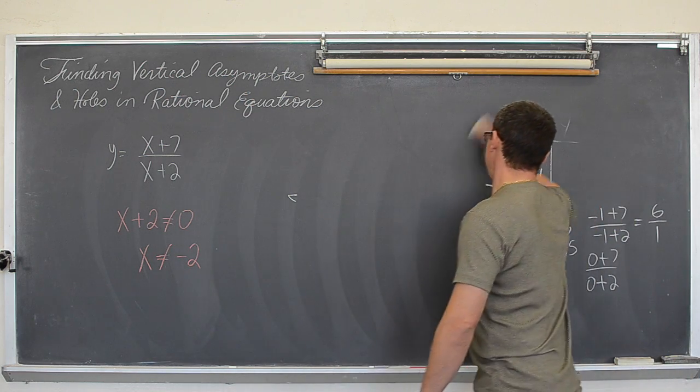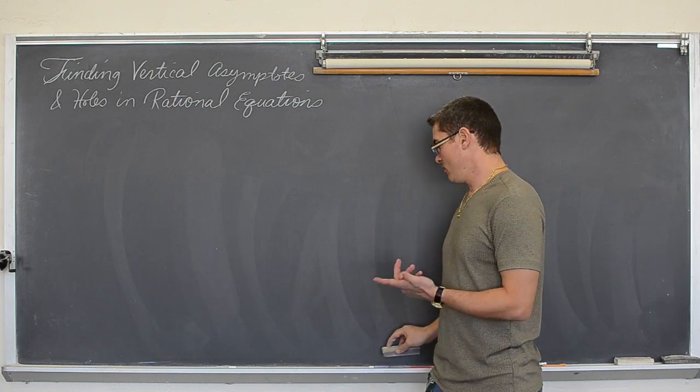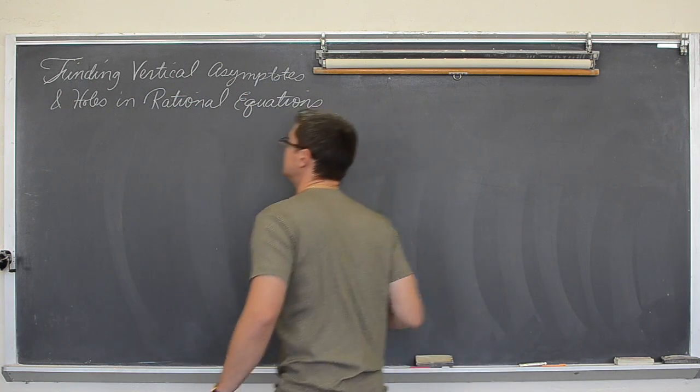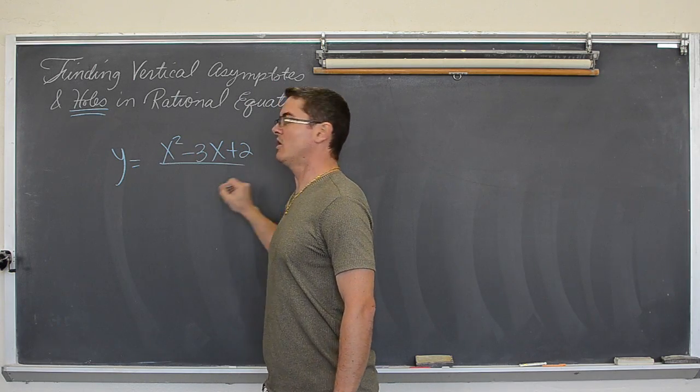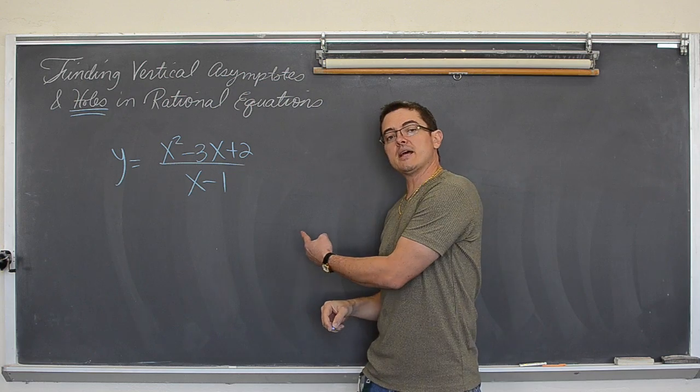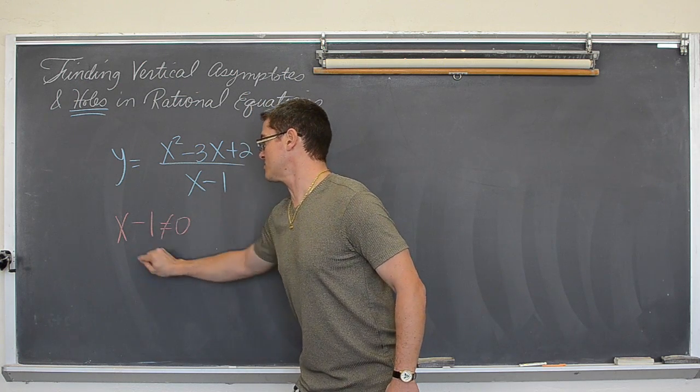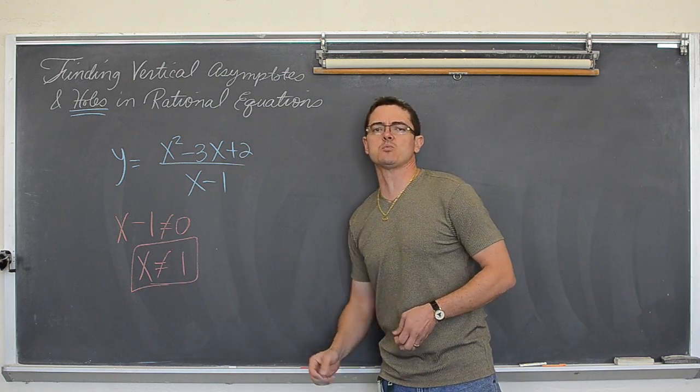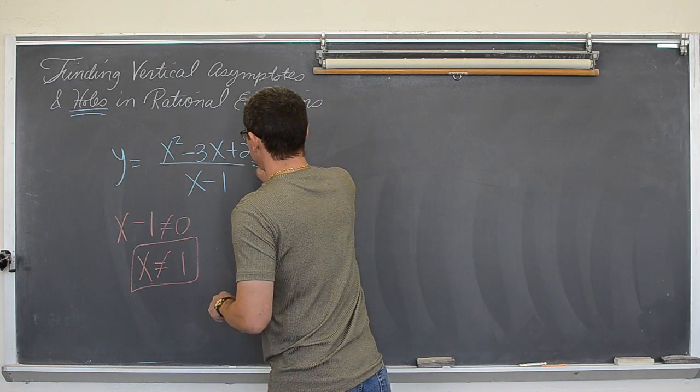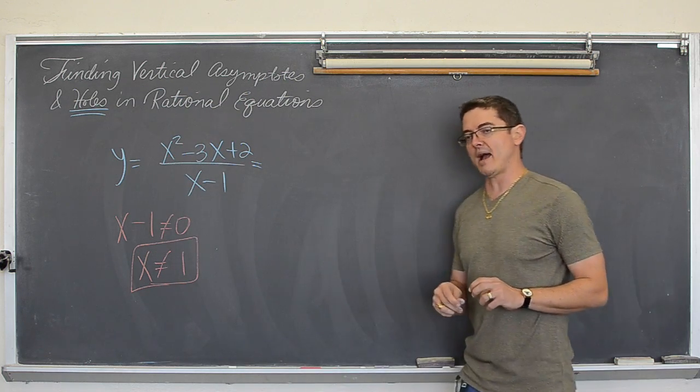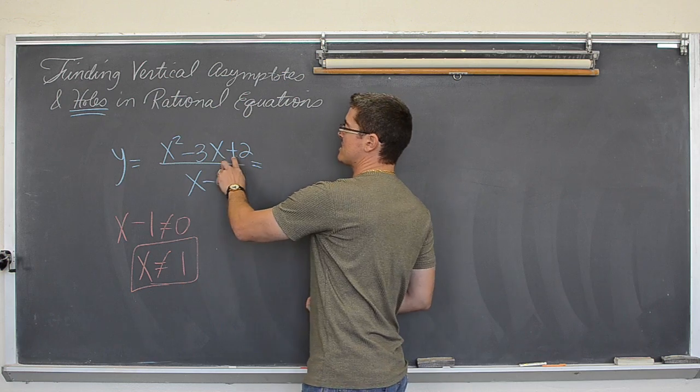So that's three examples of how when you have a vertical asymptote, or excuse me, the denominator equals zero, you have a vertical asymptote. Well how about an example where we don't get a vertical asymptote, we get a hole. So y equals x squared minus three x plus two over x minus one. Well I can make that denominator equal to zero. x plus two cannot equal zero, so x cannot equal one. So something is going to happen at x equals one. Is it going to be a vertical asymptote again? Well in this case the answer is no. The reason why is going to be found through the simplification process of this rational equation.